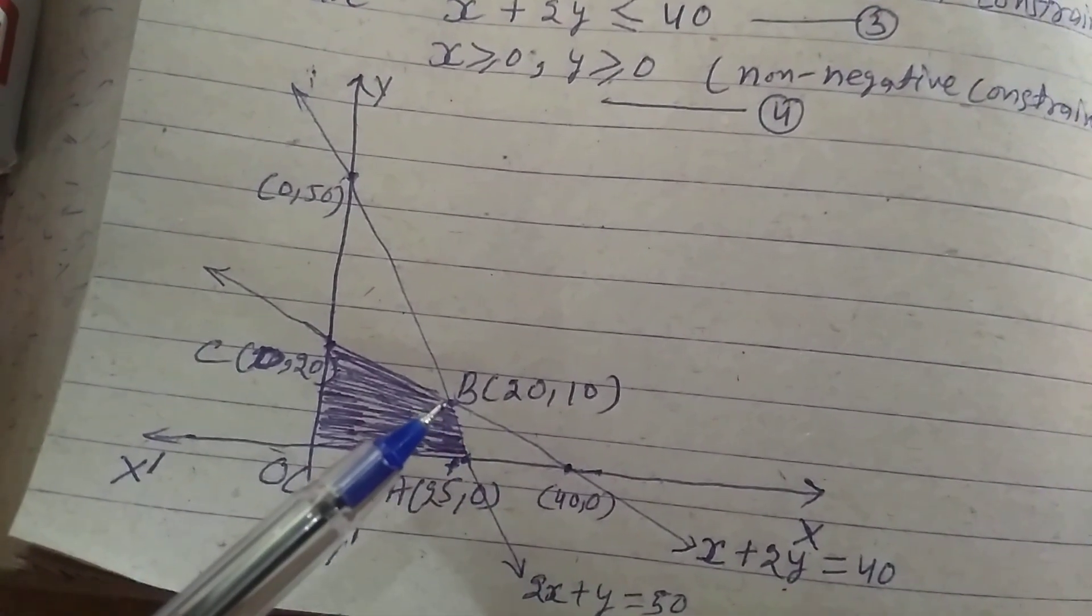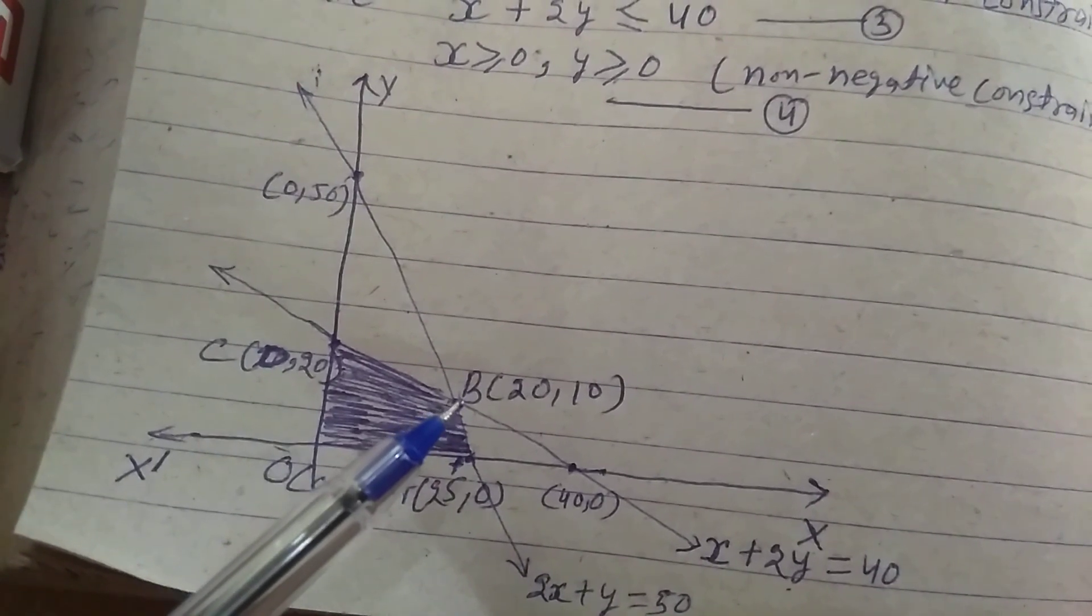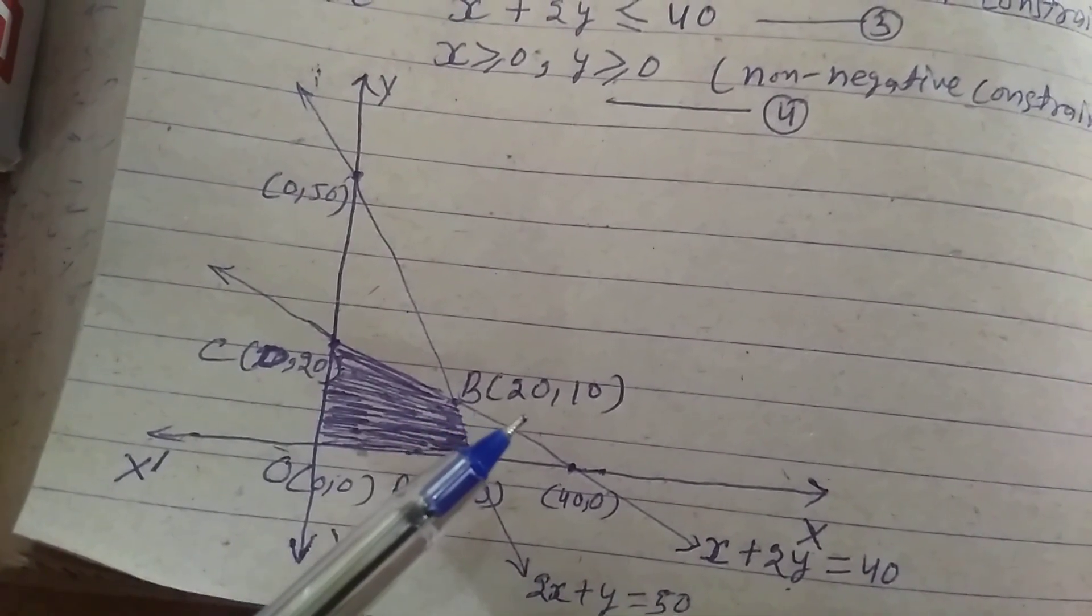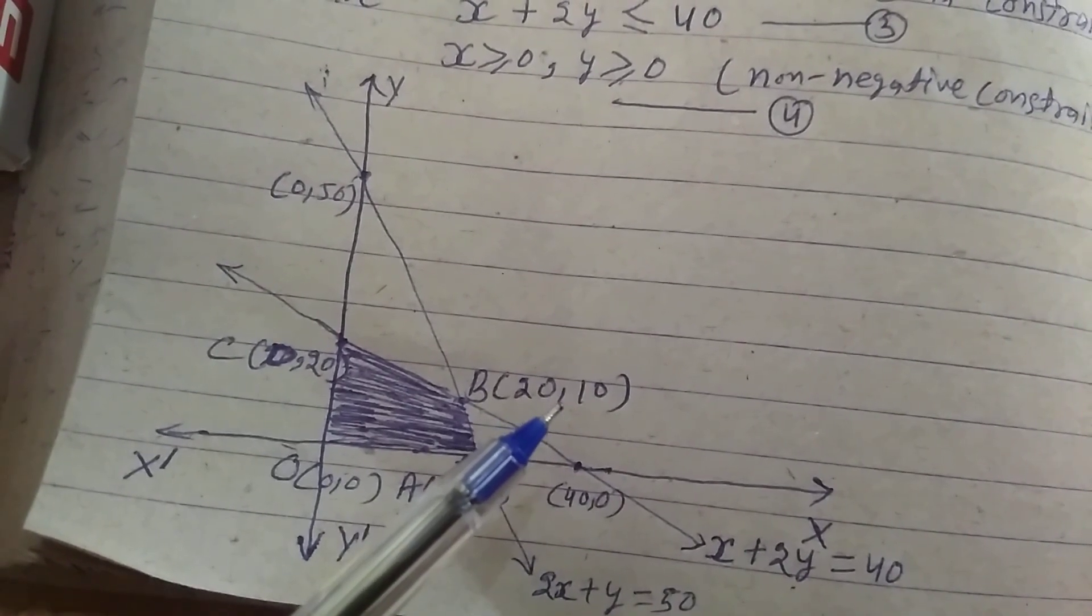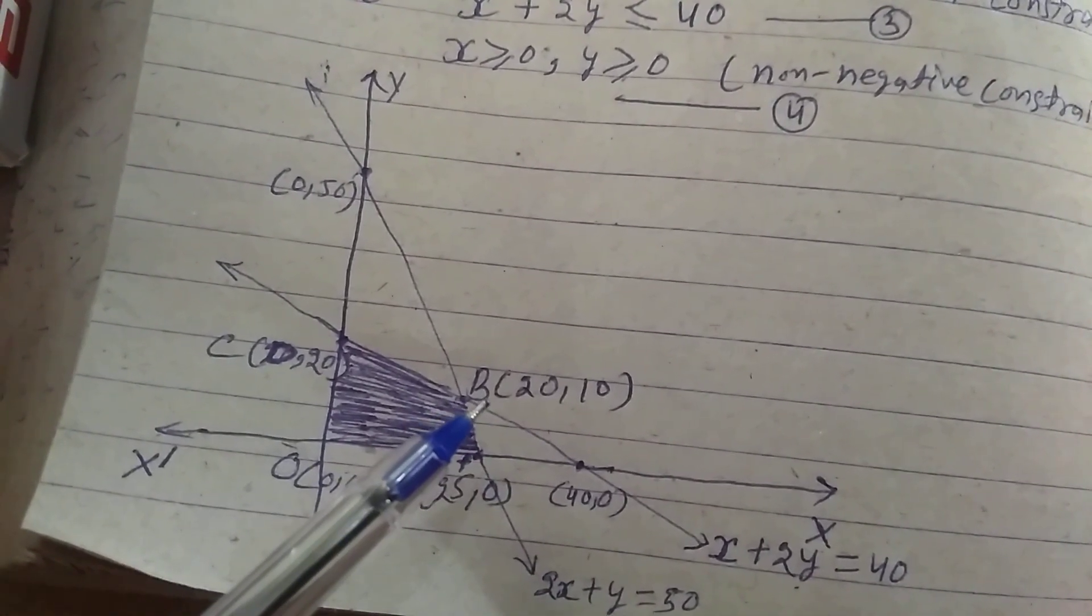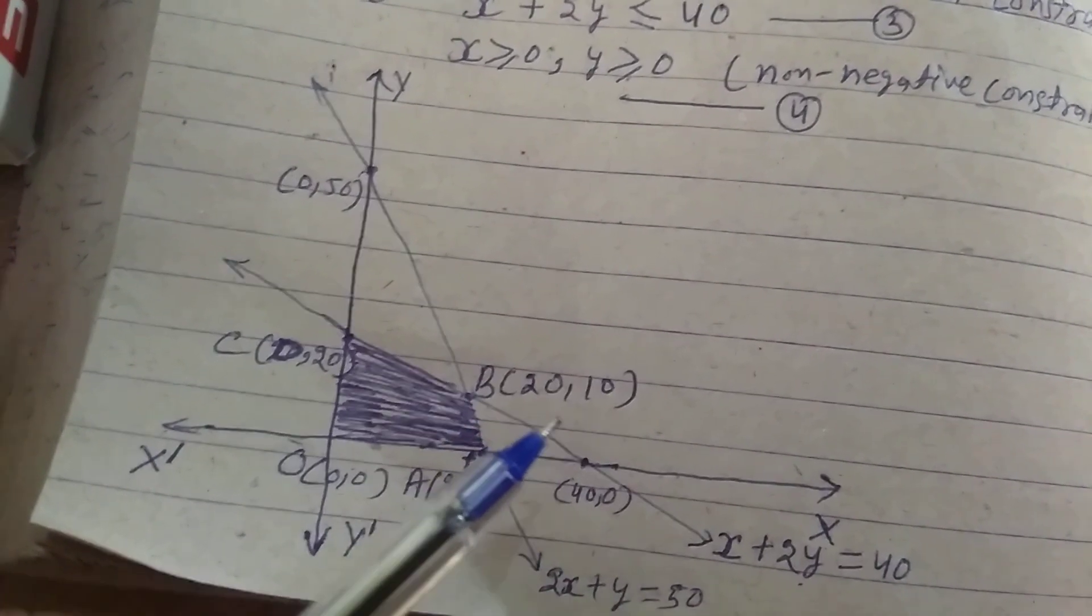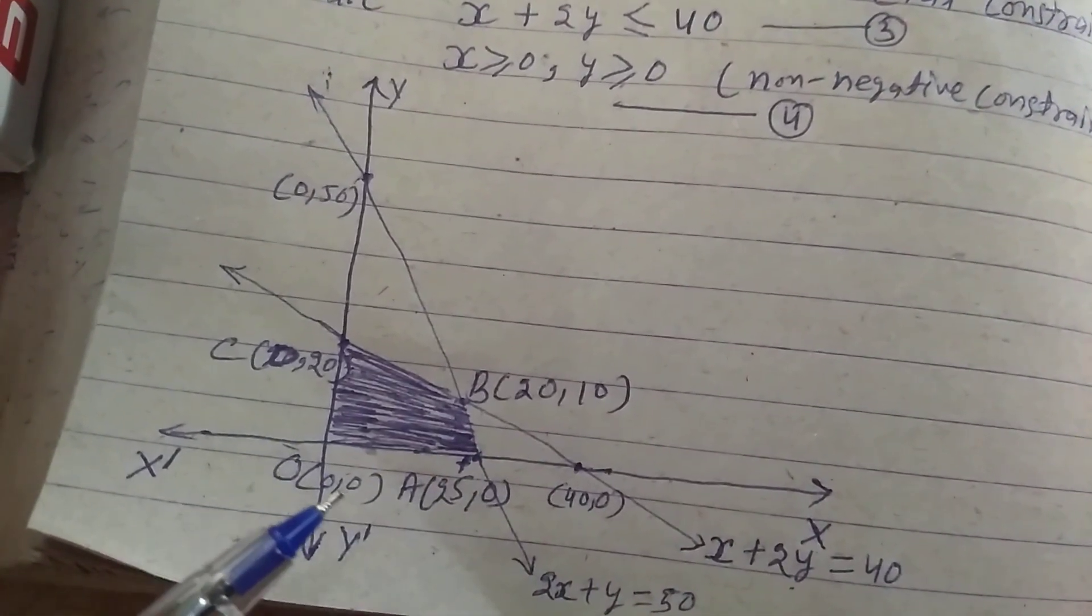And it crosses at point B, which is (20, 10). To solve equations 2 and 3, the cross point is B (20, 10). Origin is (0, 0).